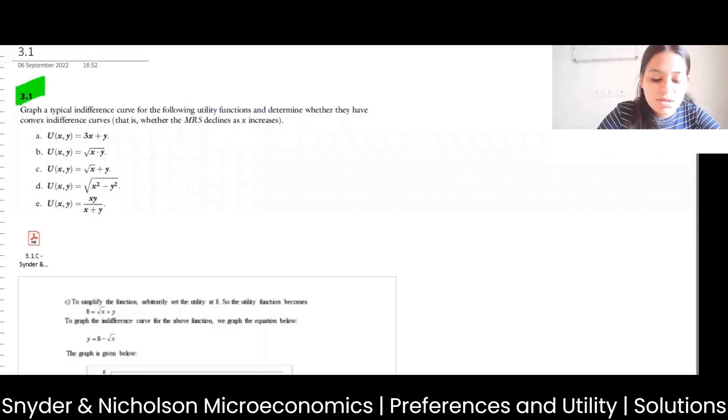Okay, let's take the third part of this question. The question states that the utility function is root x plus y. As you would have guessed, this is a quasi-linear preference.